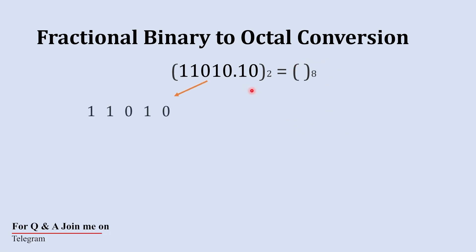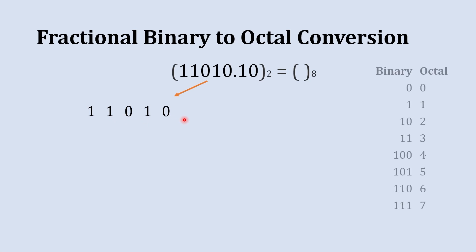First we are going to start with the whole number part. We'll write this whole number part 1 1 0 1 0 separately. Here is our binary to octal conversion table, which is just for our reference.